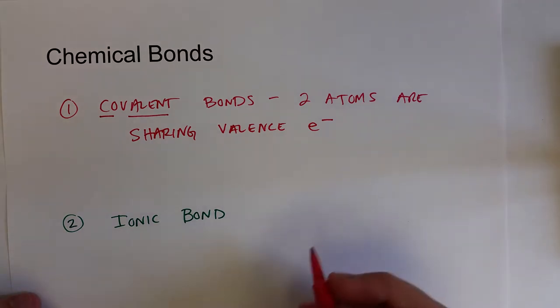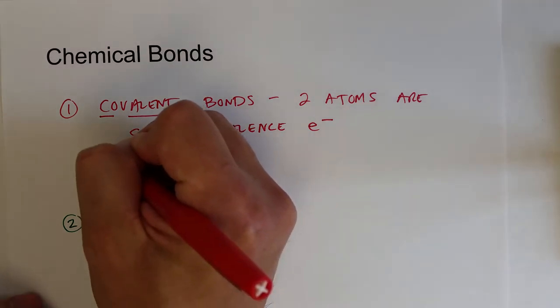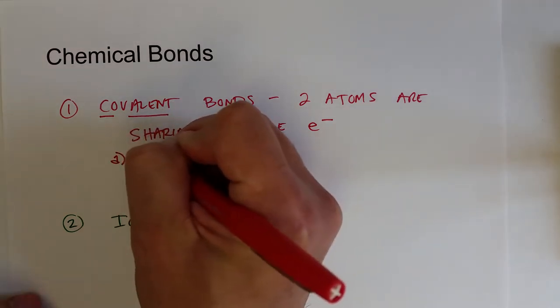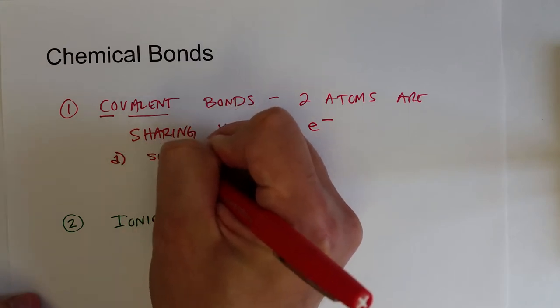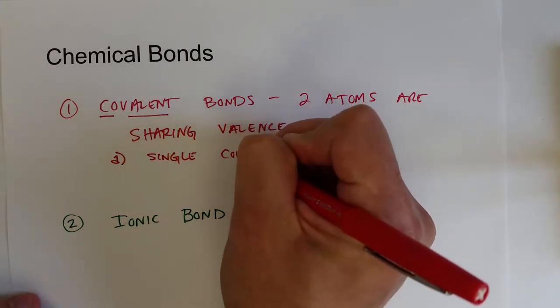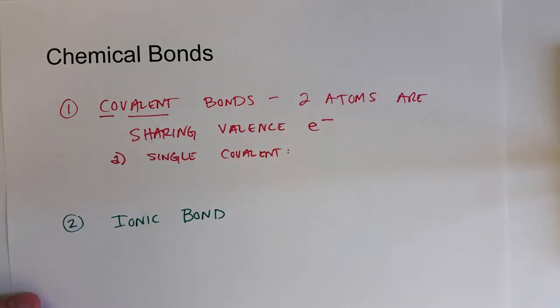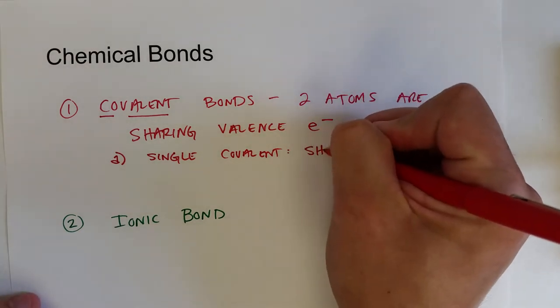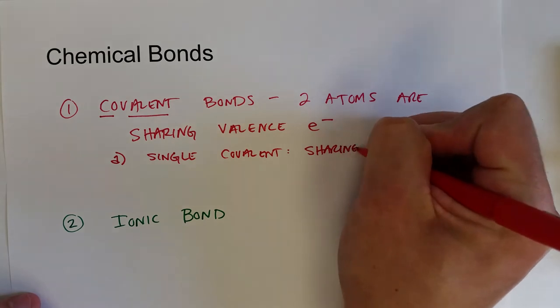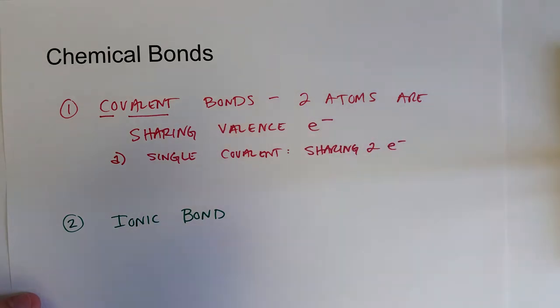These can come in a couple of varieties. One, there is the single bond, single covalent bond, where the atoms are sharing two valence electrons.